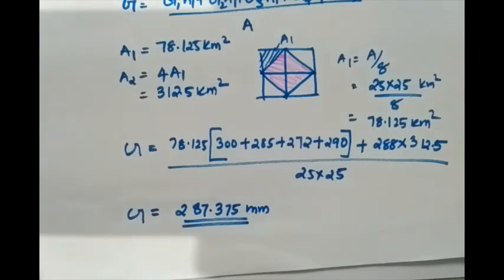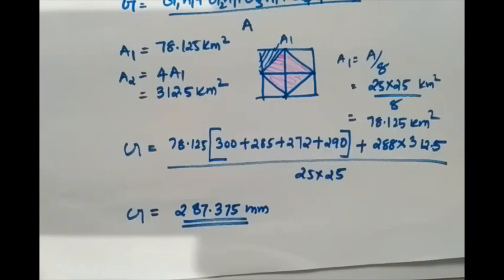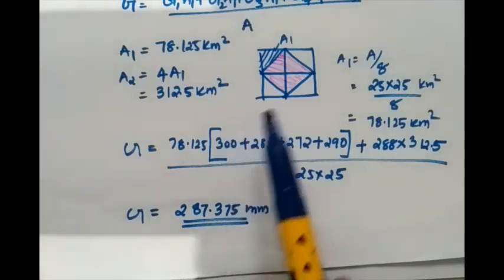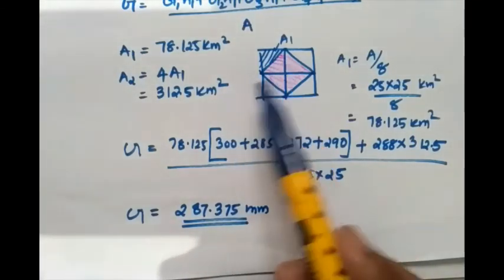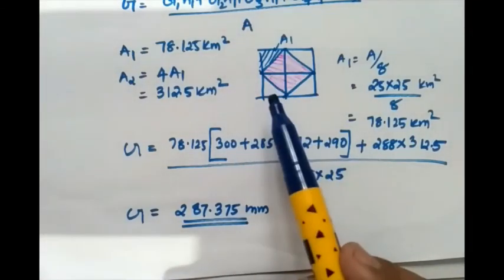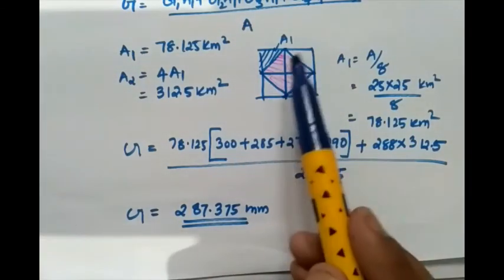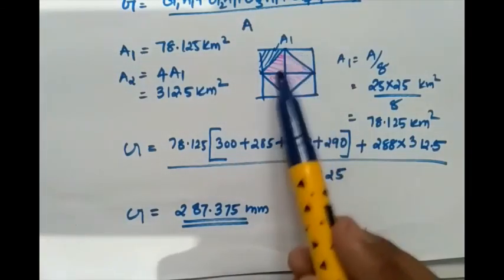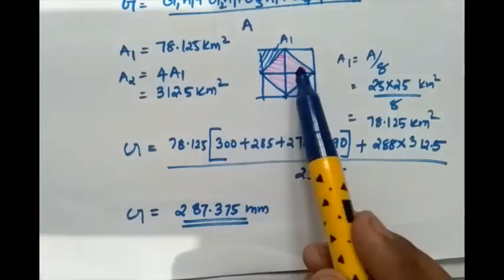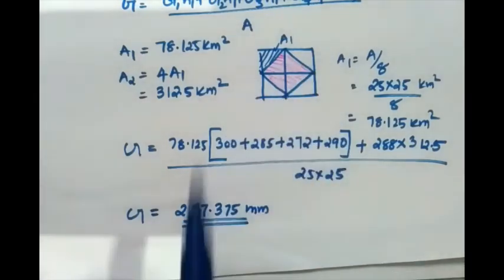The important point to note is how to correctly bisect the connections between rain gauges. This is the key step in the Tyson Polygon method, and this problem is a very direct application of it.